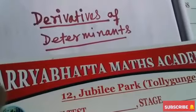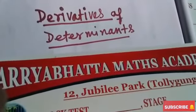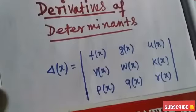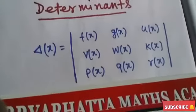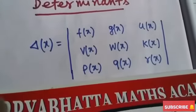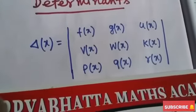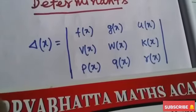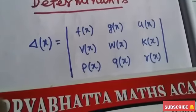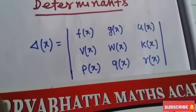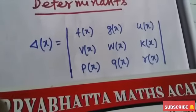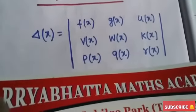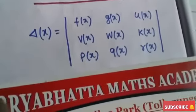So what will be the derivative of the determinant? If we write a determinant of order 3, del(x) equal to f(x), g(x), u(x), v(x), w(x), k(x), p(x), q(x), and r(x). If it is a determinant of order 3, what will be the differentiation of d/dx of del(x)?